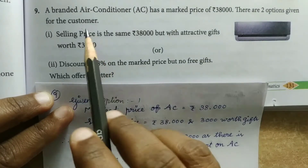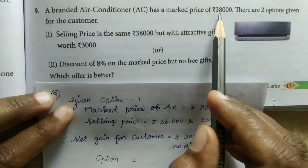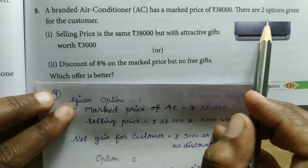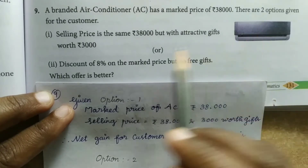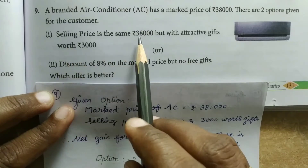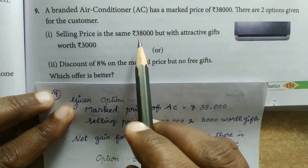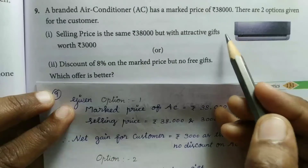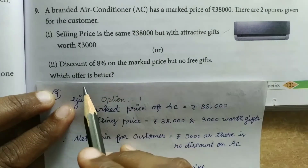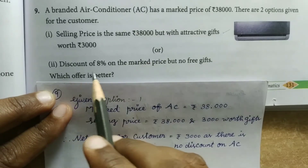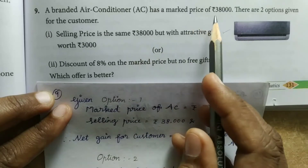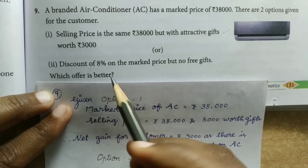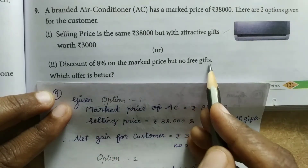So here is a branded air conditioner. For the first option, the selling price remains Rs. 38,000 with a free gift worth Rs. 3,000. This means the customer gains value from the gift, but there is no discount on the AC price itself.